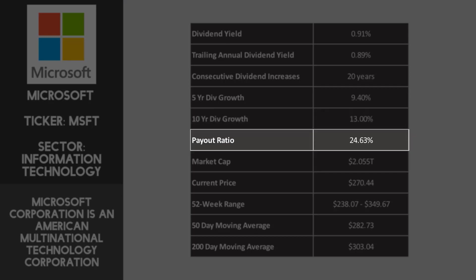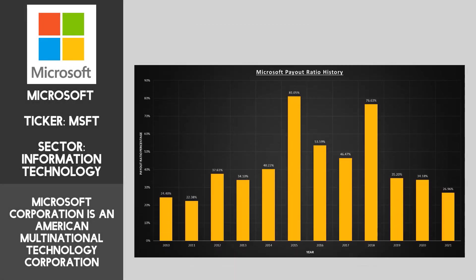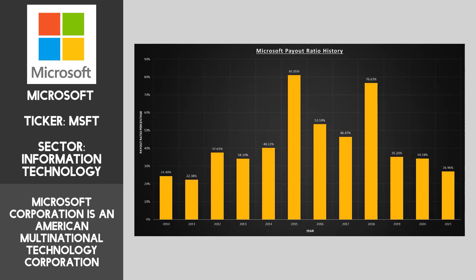The payout ratio is currently 24.63%. This just shows the proportion of earnings a company pays shareholders in dividends, expressed as a percentage of the company's total earnings. The lower the percentage, the better, and I tend to consider around 80% as being a high ratio. So 25% is incredible. And if we look at the payout ratio history, we can see that the payout ratio has been very consistent. The average ratio over this period is 23%, which I feel gives the dividends so much room to grow.